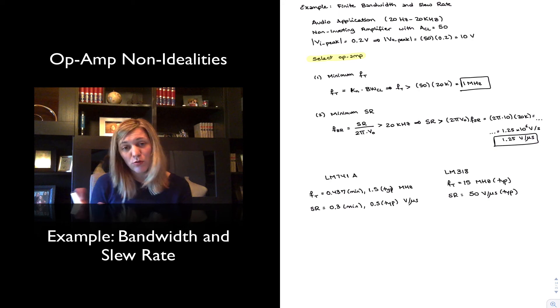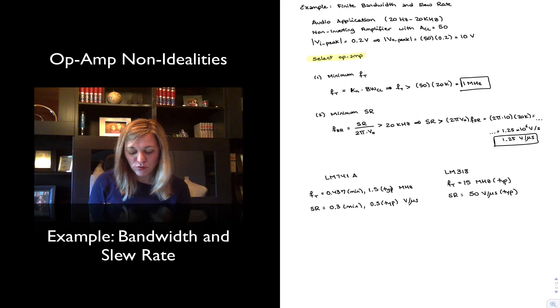Now, normally, which value will I use, the typical or the minimum to decide? In this case, there's really not an issue because we can see that the 741A is not going to meet the slew rate. In the case of the transition frequency, if we consider the typical, it will be there, but it's still close enough that we probably, you know, we'll want to give ourselves a little bit more room.